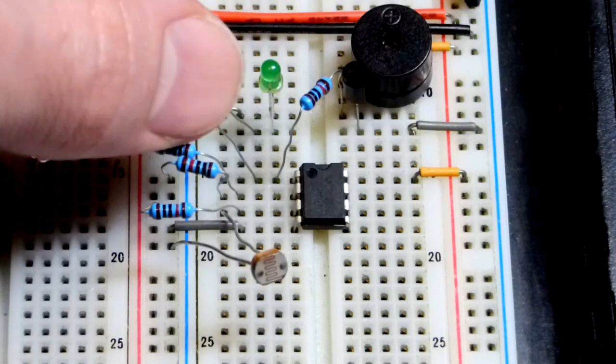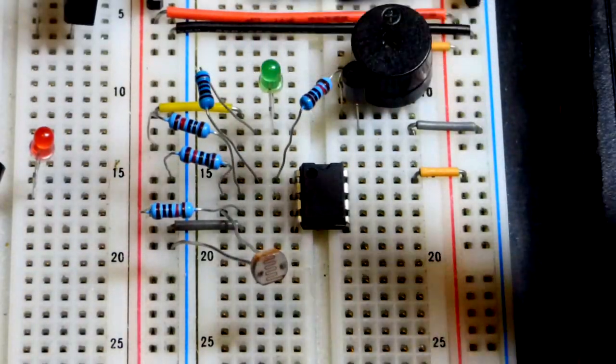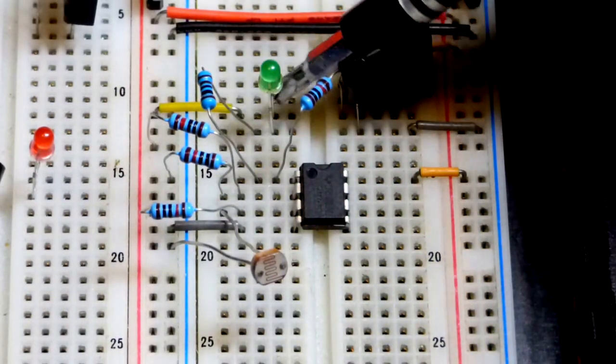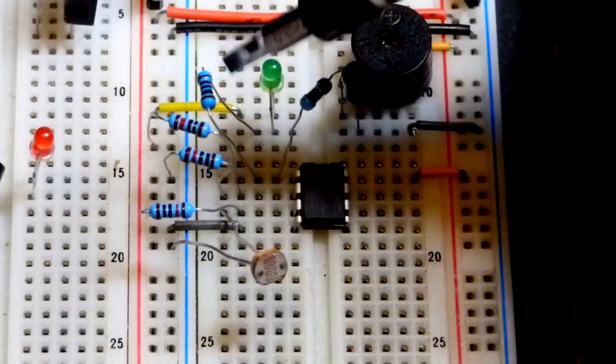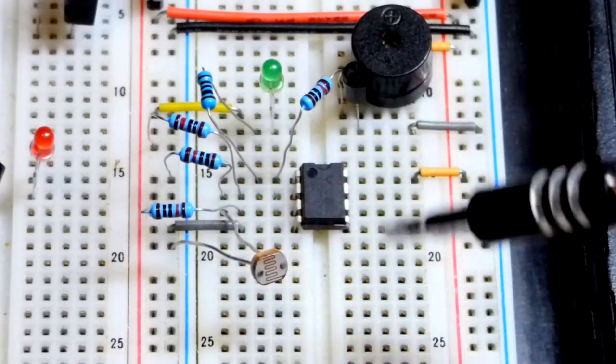Green LED has a 1 kilo ohm resistor because it gets pretty bright. And positive supply to the long lead up there, anode, short lead the cathode to the resistor. So that will light up when the output is low.